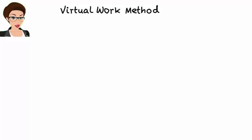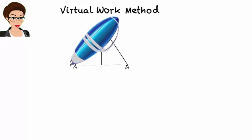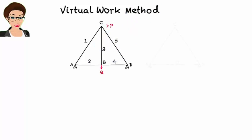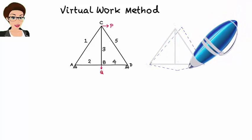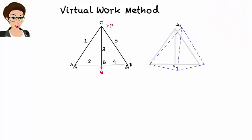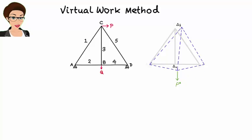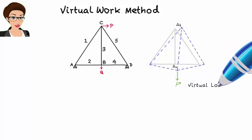Let's start by examining the basis of the method. Suppose we have a structure subjected to a set of external loads. Consequently, the structure is going to displace. Let's refer to the horizontal displacement under p as delta-h and the vertical displacement under load q as delta-v. Now suppose we add an imaginary vertical load to point b. Since this load, denoted by p-star, is imaginary, we'll call it a virtual load. The structure can be easily analyzed under p-star to determine the virtual member forces.